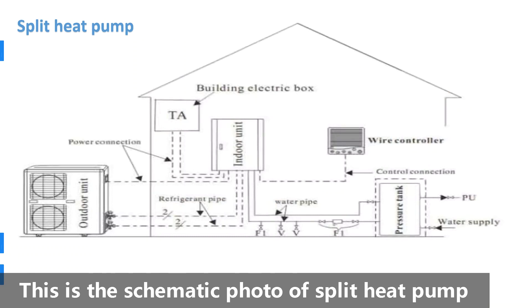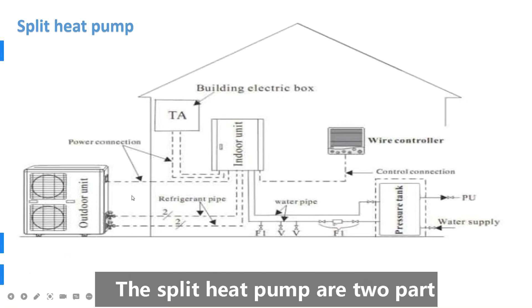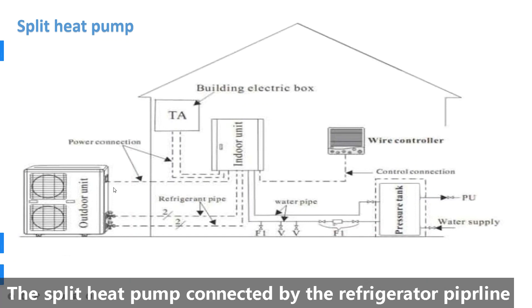This is the schematic photo of a split heat pump. As you can see, the split heat pump has two parts: the indoor unit and the outdoor unit. The split heat pump connects by refrigerant pipeline.